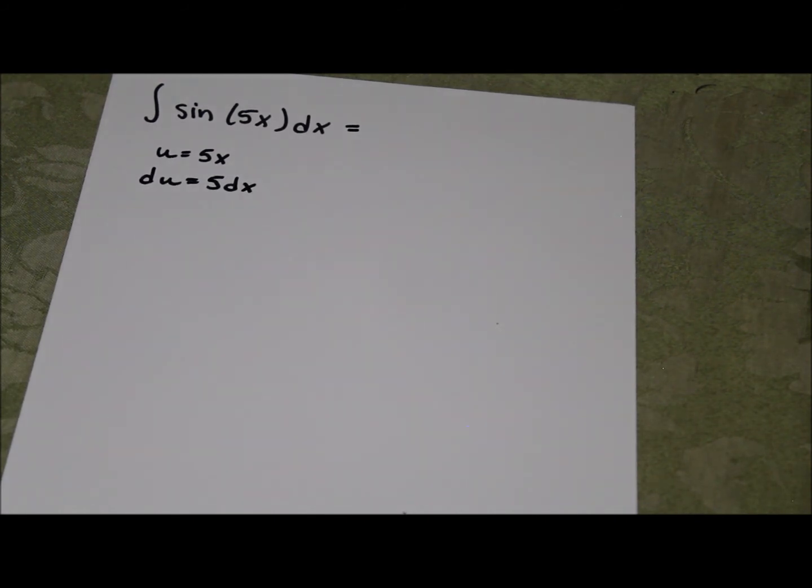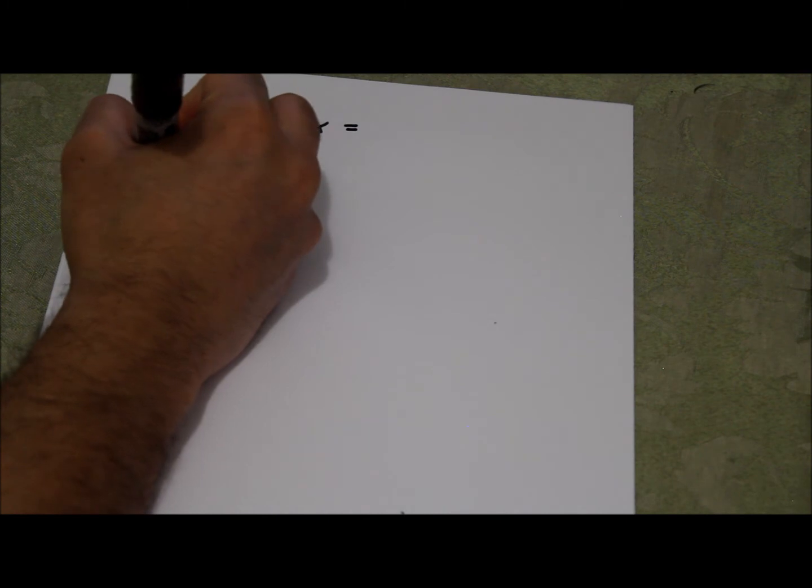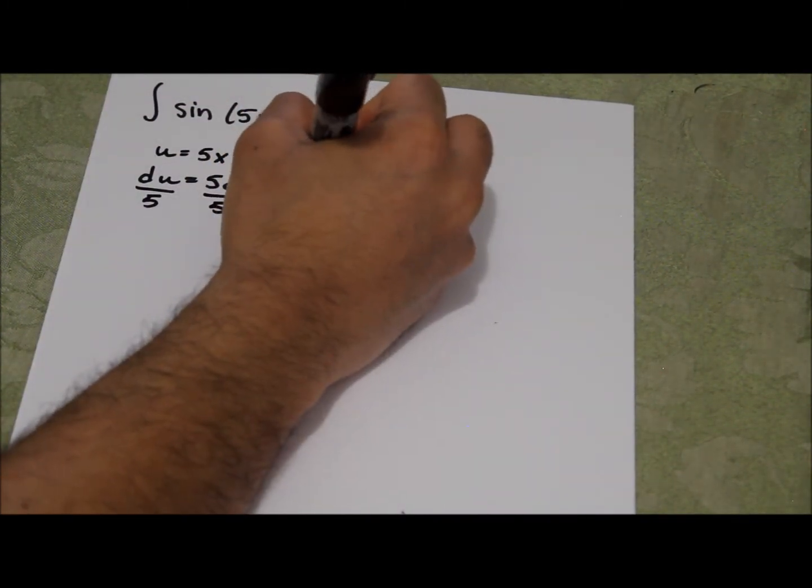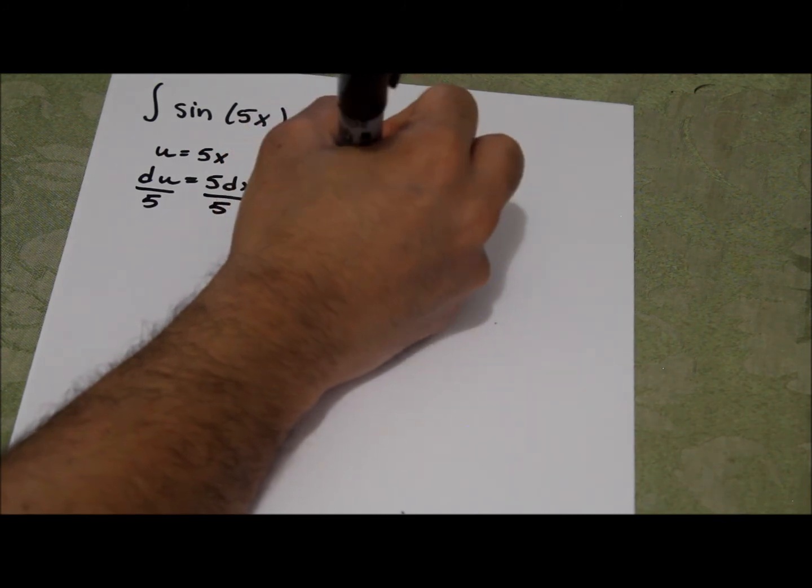Again, we don't want 5 dx, we want dx. So we divide both sides by 5. Now we get du divided by 5 equals dx.